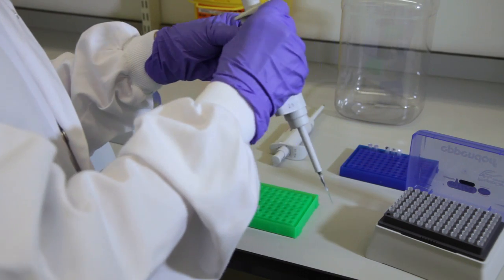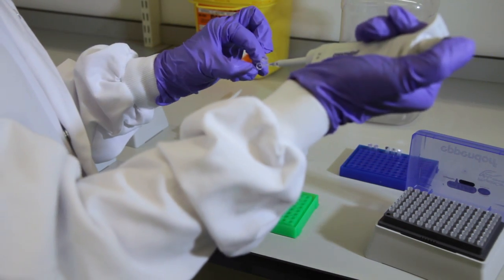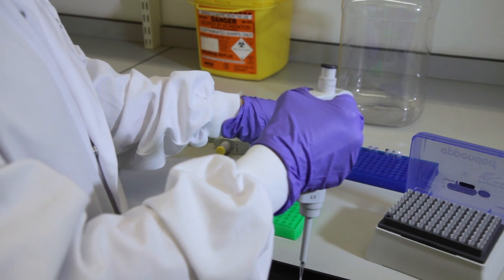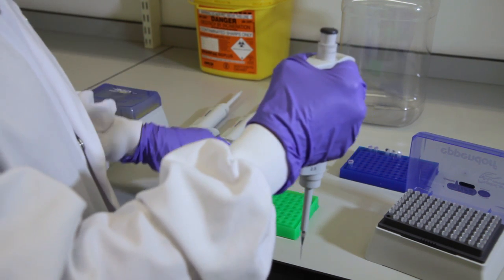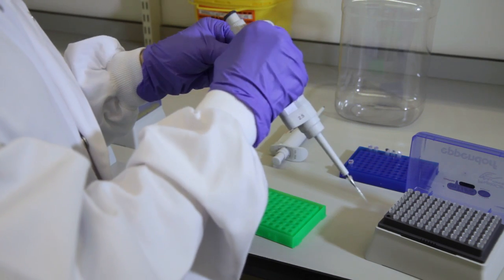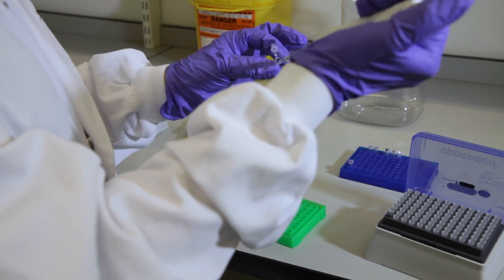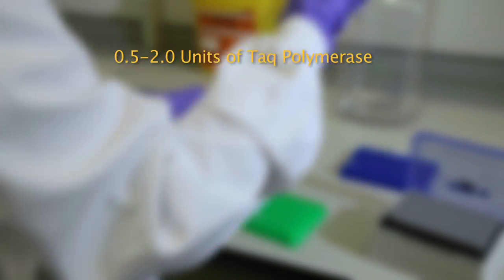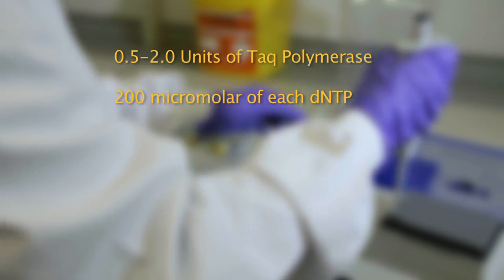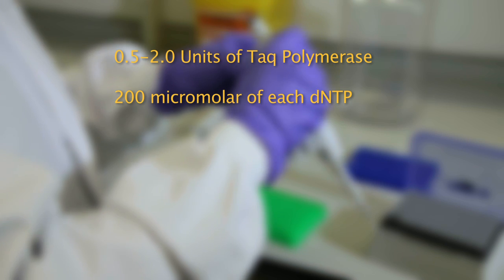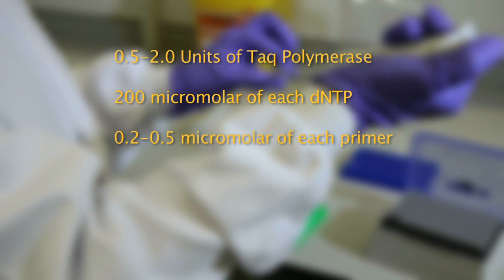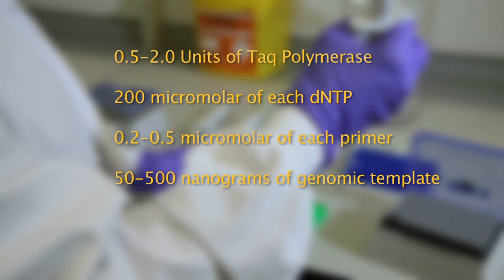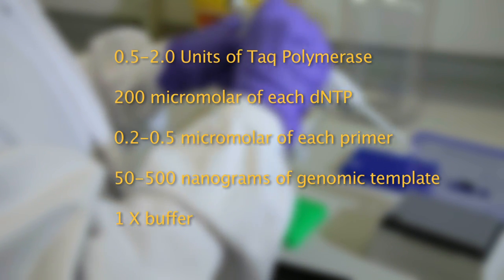The proportions of the reaction mixture have a great influence on the quality of PCR results. There is a general formula for concentrations of template, enzyme, primers and nucleotides to use, but this can be varied a little if necessary. The general guidelines are 0.5 to 2 units of TAC polymerase, 200 micromolar of each DNTP, 0.2 to 0.5 micromolar of each primer, 50 to 500 nanograms of genomic template and 1 times buffer.